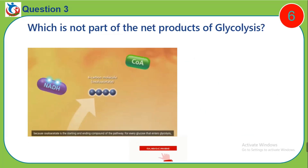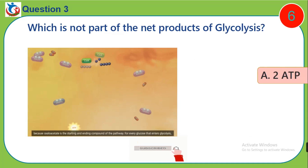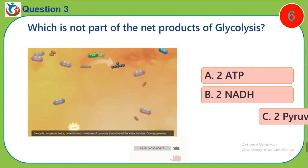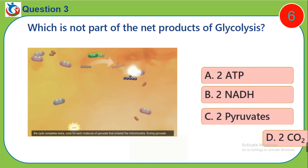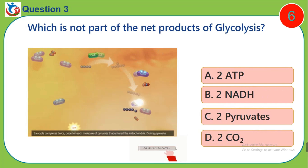Question 3. Which is not part of the net product of glycolysis? A. 2 ATP. B. 2 NADH. C. 2 pyruvate. D. 2 CO2.